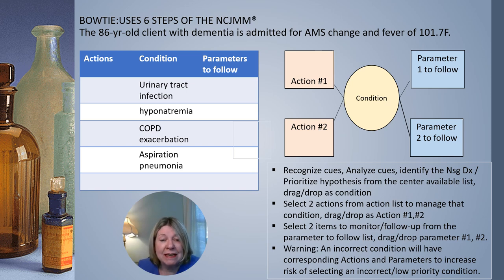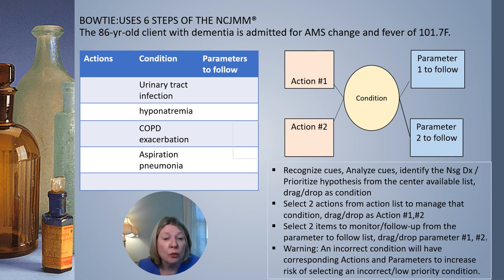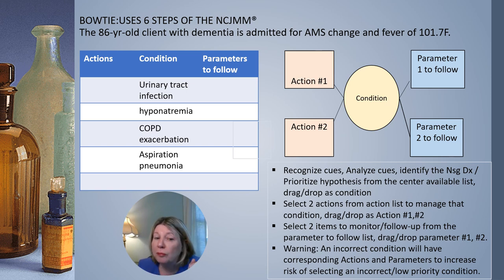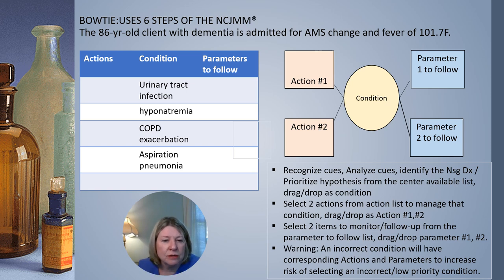A warning is needed. When you see these different conditions listed, understand that if it were an incorrect condition — say, hyponatremia — the test writers would have placed at least one action or one parameter corresponding to it, just to distract you, or have you select the wrong answer because you didn't recognize or analyze the cues sufficiently.